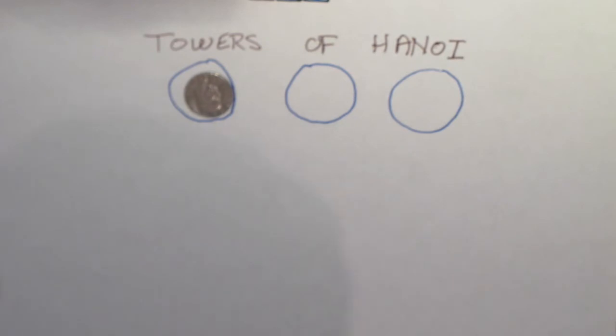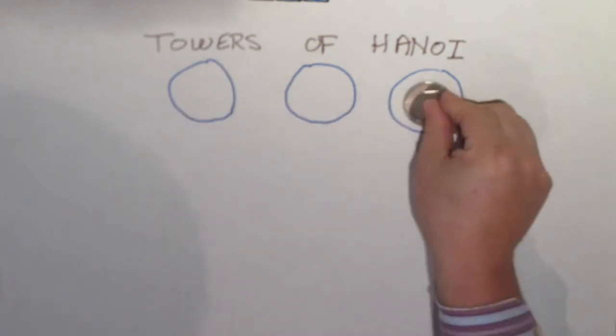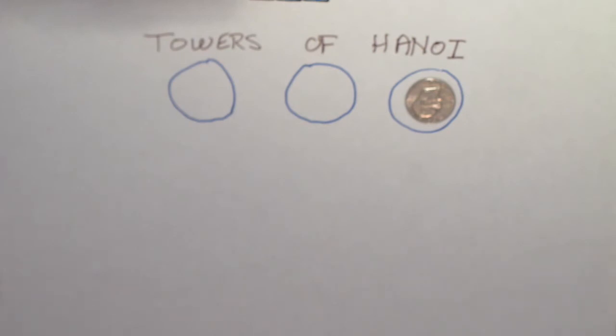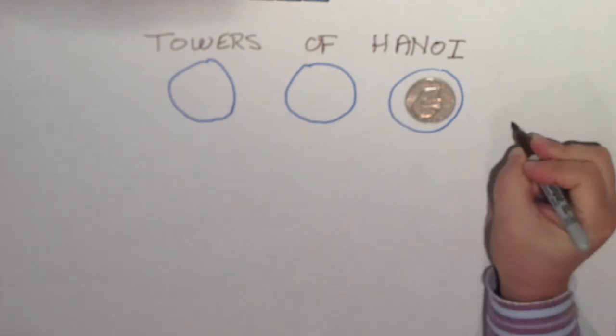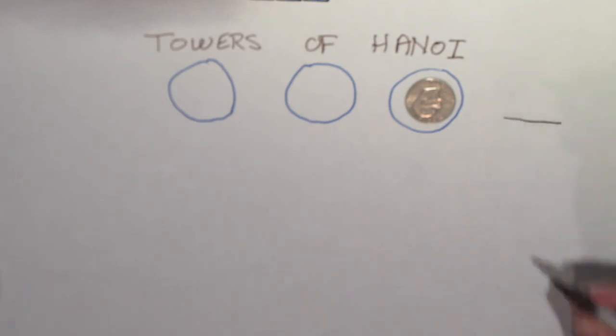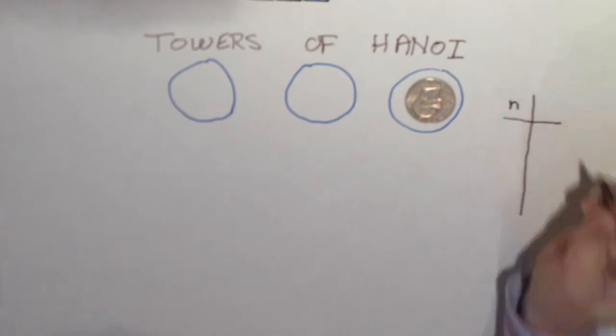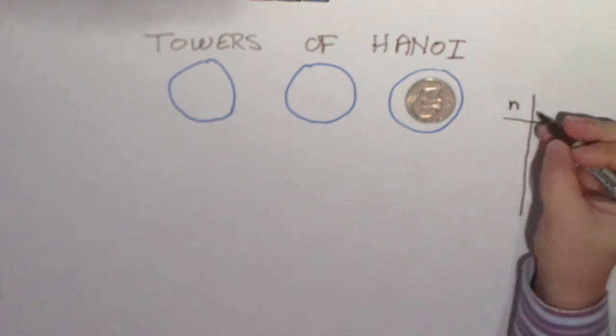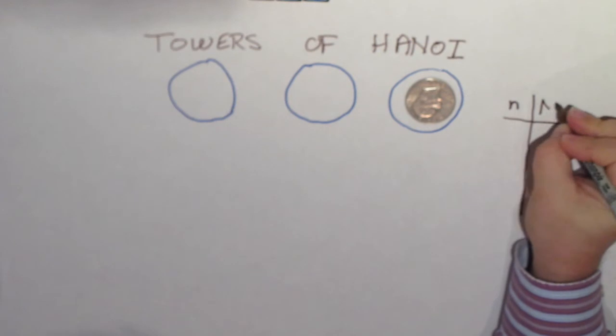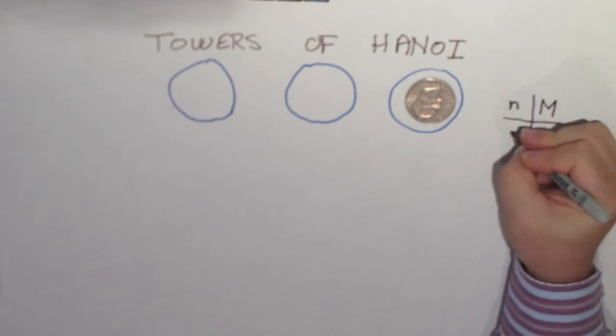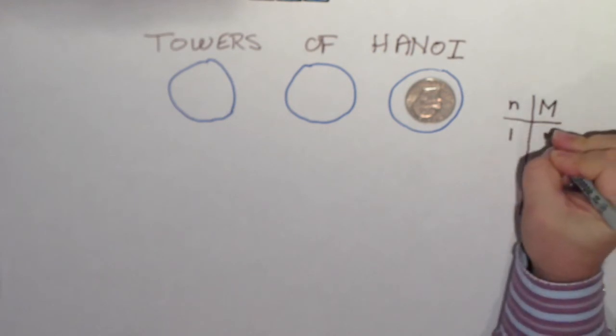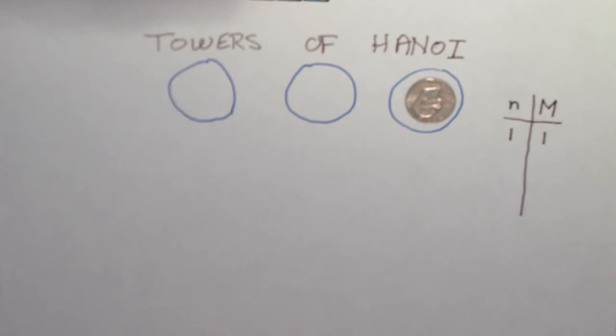What about one coin? How many moves is that going to take? That's pretty easy, one. So let's keep track of this. Over here on the side, we'll make a little table. I'm going to use lowercase n to represent the number of coins in the stack, and an uppercase M to represent the number of moves it took me. So one coin, one move, easy enough.